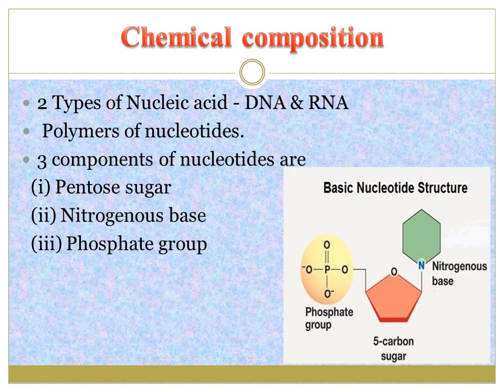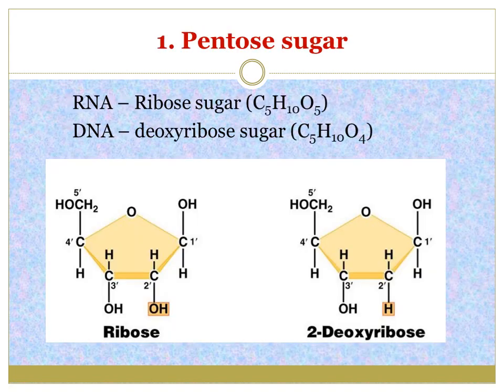Chemical composition of nucleic acid. There are two types of nucleic acid — DNA and RNA — and these nucleic acids are polymers of nucleotides. Many nucleotides combine together to form these nucleic acids. The nucleotides have three components: the pentose sugar, nitrogenous base, and phosphate group. Pentose means a 5-carbon compound sugar. The pentose sugar present in RNA is ribose sugar with the formula C5H10O5, and the pentose sugar present in DNA is deoxyribose sugar with the formula C5H10O4.